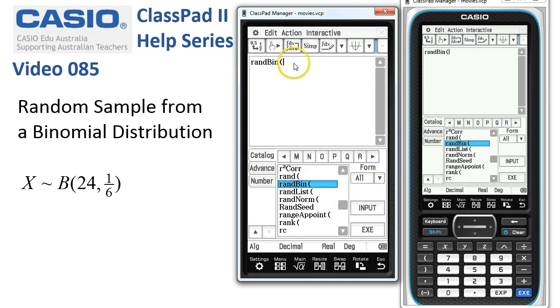I'll tap input and the parameters are n followed by p 1 divide 6 and when I tap execute I just get a single random sample drawn from that distribution.